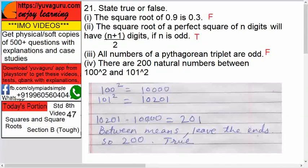If you subtract them, you get 201. But this 201 includes the endpoint. For example, 10-2=8, meaning 3,4,5,6,7,8,9,10 - but 10 is also counted. We don't want this last number because we want 'between.' So we exclude 10,201, giving us 200. Between means leave the ends, so 200 is the answer. This statement is true.